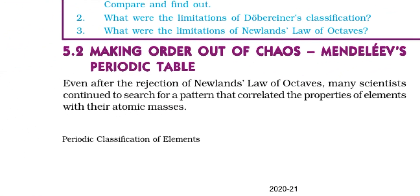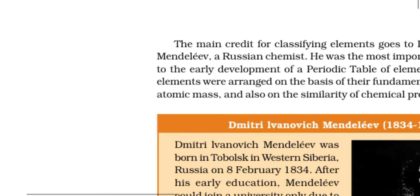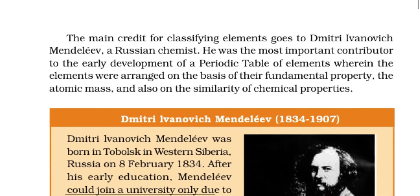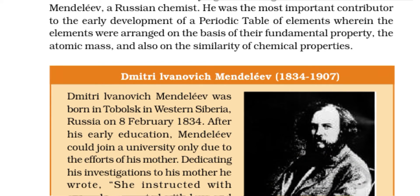Making order out of chaos — Mendeleev's periodic table. Even after the rejection of Newland's Law of Octaves, many scientists continued to search for a pattern that correlated the properties of elements with their atomic masses. The main credit for classifying elements goes to Dmitri Ivanovich Mendeleev, a Russian chemist, who arranged elements on the basis of atomic mass and similarities of chemical properties.